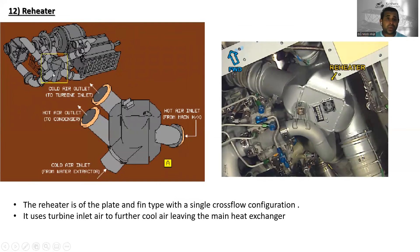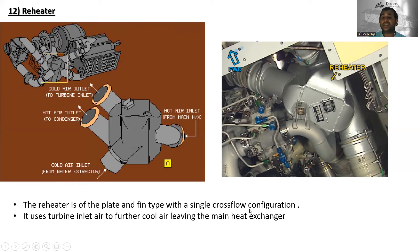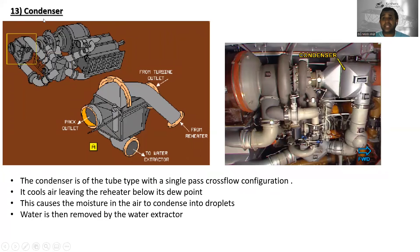The reheater — hot air inlet comes from the main heat exchangers, cold air outlet goes to turbine inlet, hot air outlet goes to the condenser, and cold air inlet comes from the water extractor. The reheater is of the plate and fin type with single cross-flow configuration. It uses turbine inlet air to further cool air leaving the main heat exchanger.